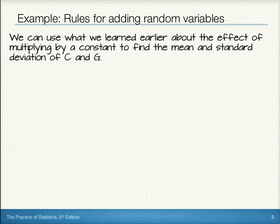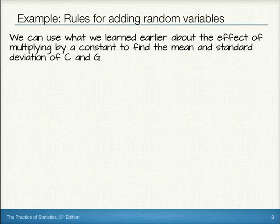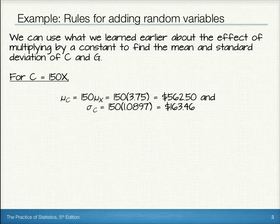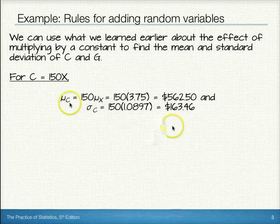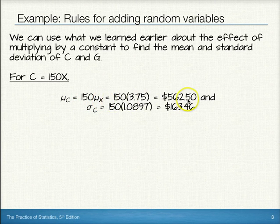We can use what we learned earlier about the effect of multiplying by a constant to find the mean and standard deviation of C and G. For C, since that equals 150X, the mean of C will simply be 150 times the mean of X, or in this case, $562.50. Likewise, the standard deviation of C can be found by multiplying the standard deviation for X times 150, so we get a standard deviation of $163.46.